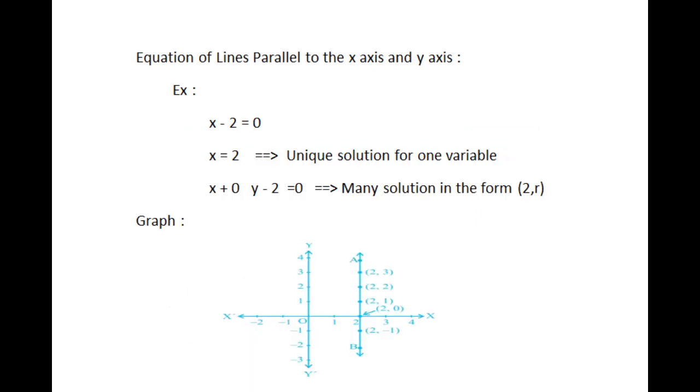Equation of lines parallel to the x-axis and the y-axis. Now, consider the equation x minus 2 equal to 0. If it is one variable, then it has the unique solution x equal to 2, which is a point on the number line.